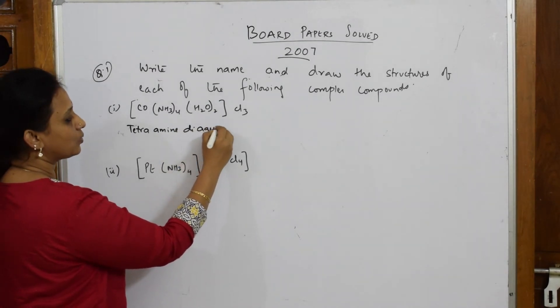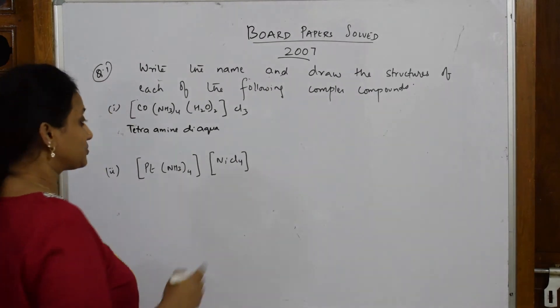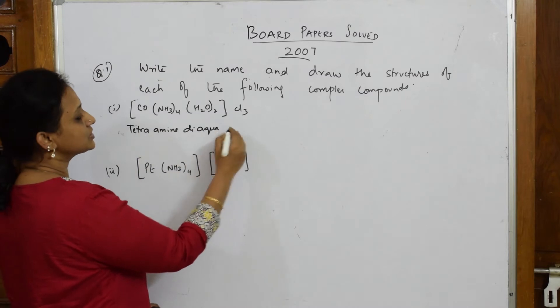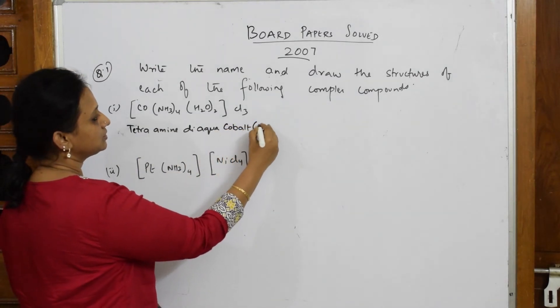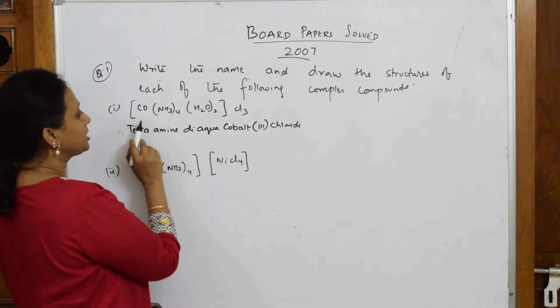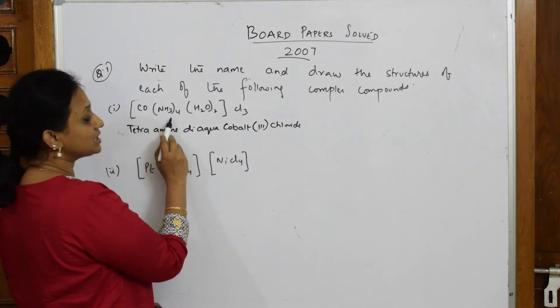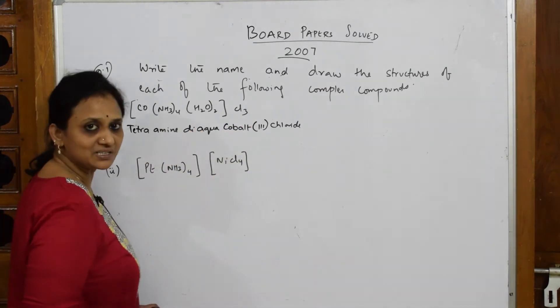Di-aqua or aqua, and we have already done the nomenclature. Di-aqua cobalt(3) chloride. How did I get 3? Let me tell you. This is x, this is a neutral ligand, this is also neutral ligand, this is minus 3. When it comes out it becomes plus 3, so 3 chloride.